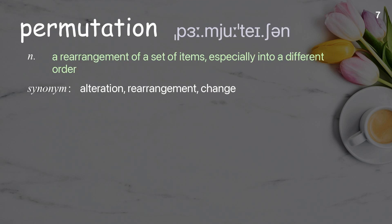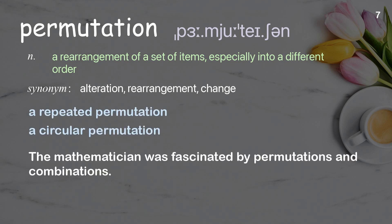Permutation. A rearrangement of a set of items, especially into a different order. Examples: a repeated permutation, a circular permutation. The mathematician was fascinated by permutations and combinations.